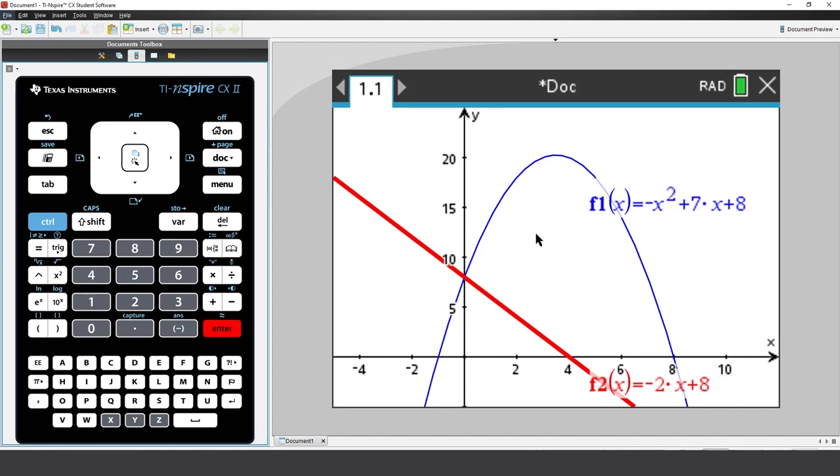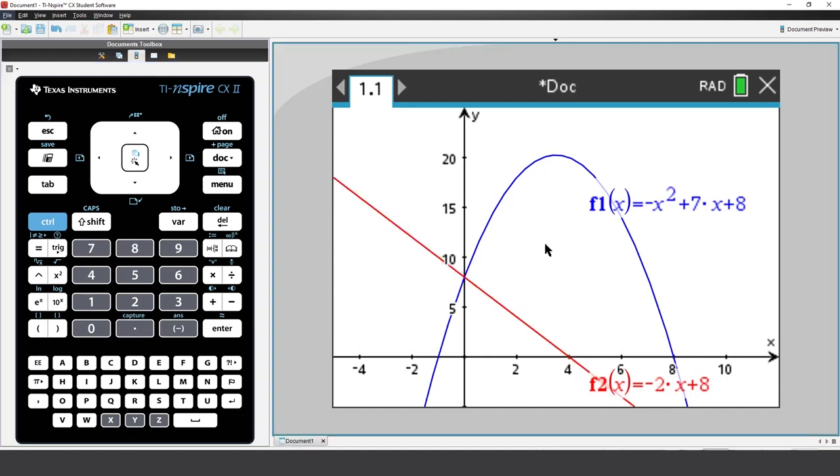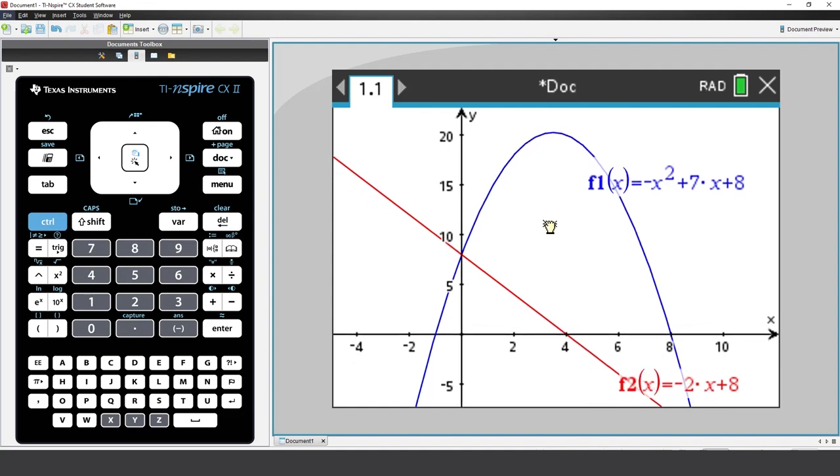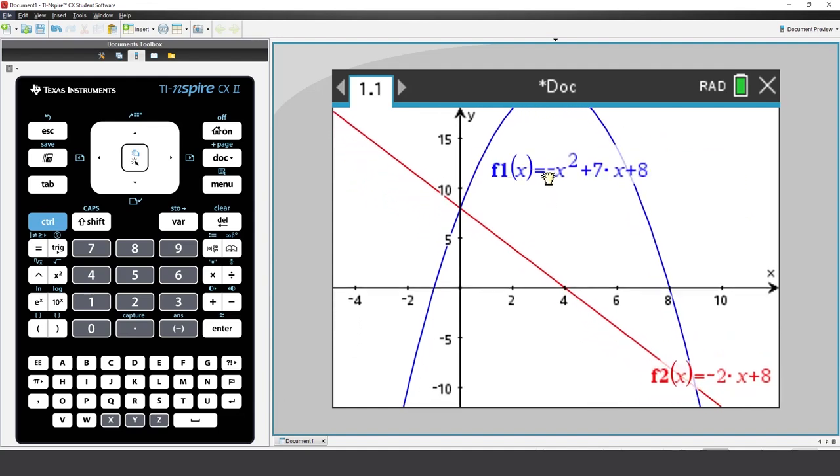Our third option for changing the window settings is to simply grab the screen. Place the mouse in a blank region of the screen, and then click and hold. Watch as the hand scrunches up the otherwise flat plane. Now simply drag the plane to where you need it to be.